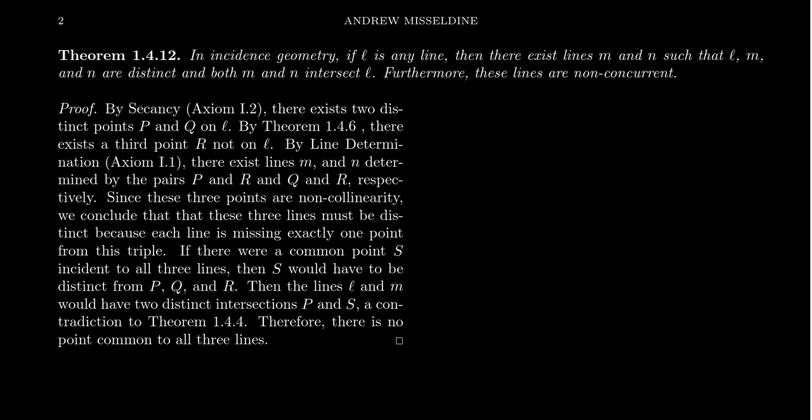So we're starting off with a line. And I guess I should mention that this statement we're trying to prove right now is very similar to a statement we proved previously. In fact, this statement we're trying to prove is essentially the dual statement to Theorem 1.47. Theorem 1.47 we proved in the previous video says that if P is a point, then there exist points Q and R so that P, Q and R are non-collinear. We want to do the same thing with lines and non-concurrency.